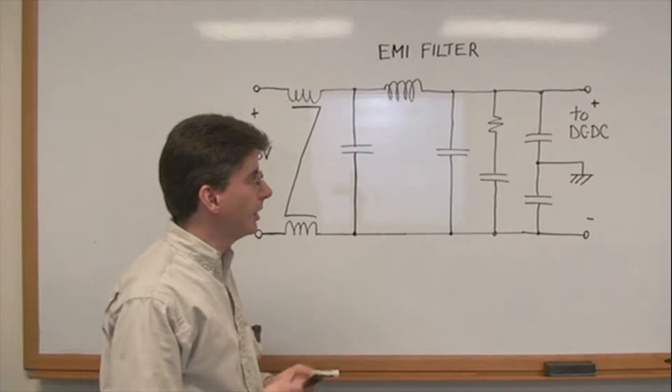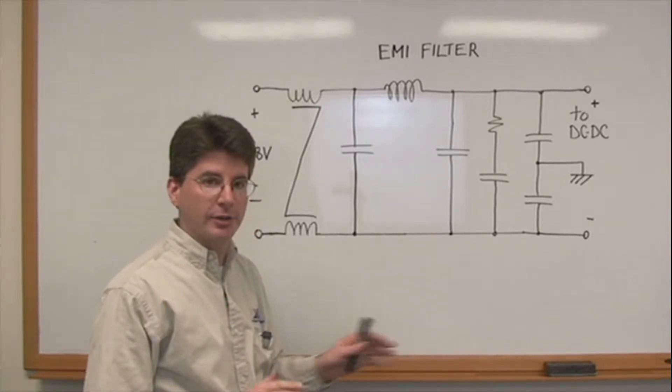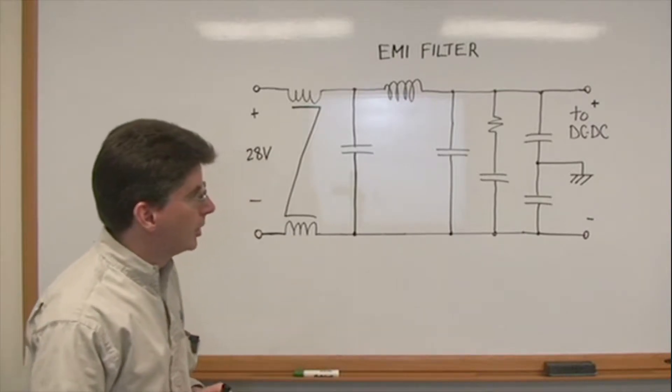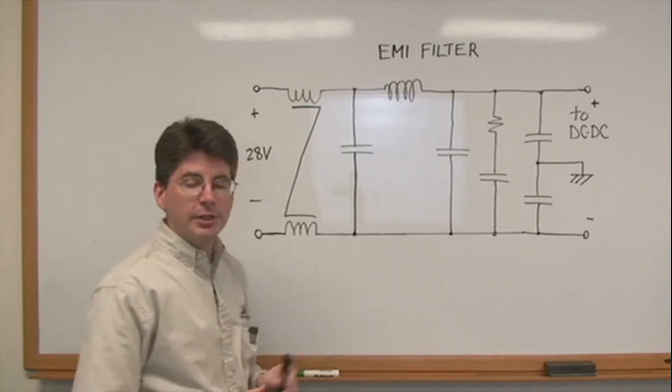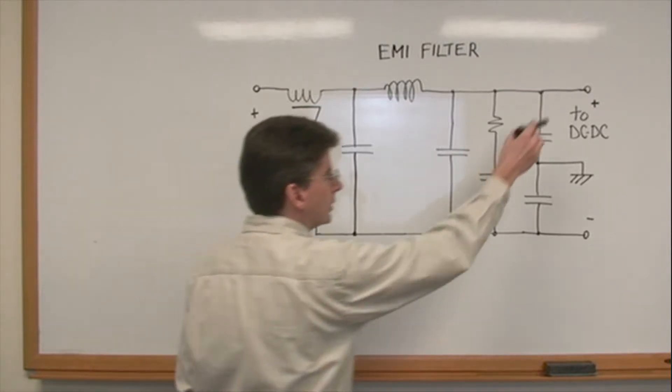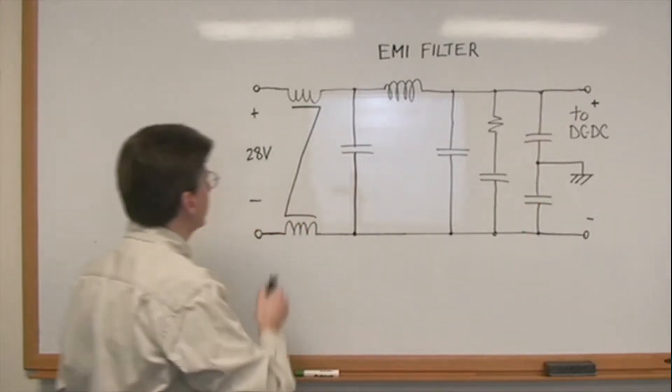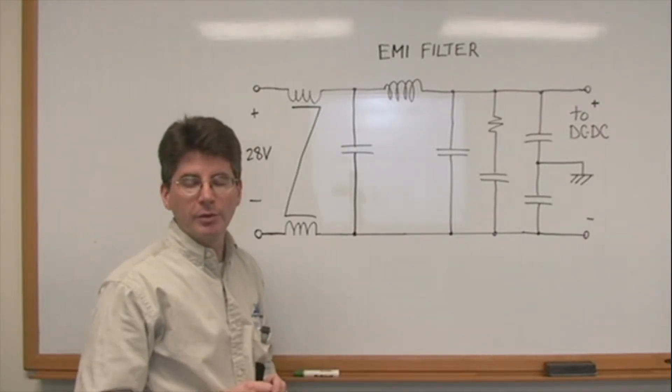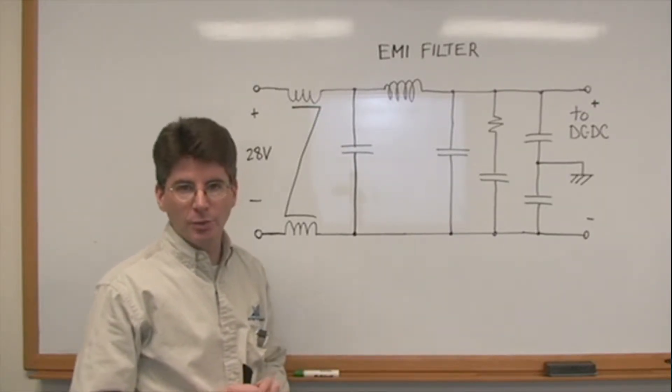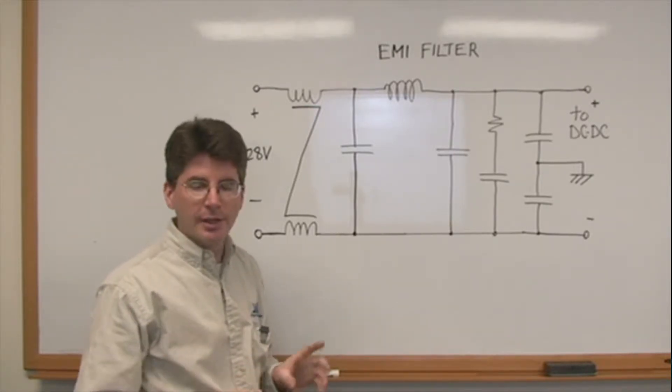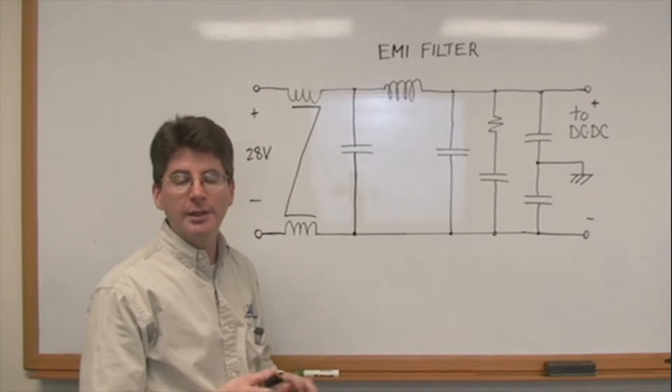So this filter placed in front of the DC-DC converter will filter conducted emissions on this line such that back at the source the conducted emissions will be low enough that you will meet requirements for MIL-STD-461. VPT's filters meet both 461C as well as 461D, E and F.